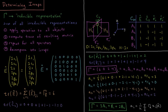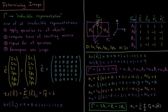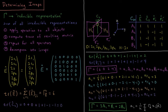This reducible representation can be separated into a linear combination of irreducible representations. Our four irreps in C2V are A1, A2, B1, and B2, with their characters listed under each operation. So gamma is some coefficient times A1, plus some coefficient times A2, plus some coefficient times B1, plus a coefficient times B2. The systematic way to find these coefficients uses what's called a reduction formula.